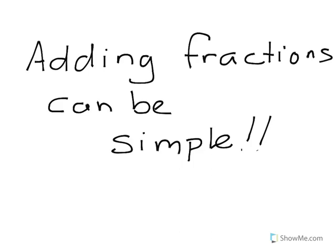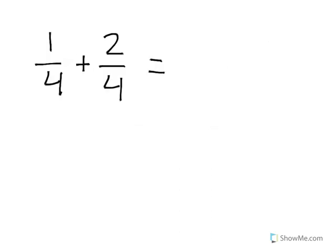Adding fractions is actually very simple. Let's look at a problem: one fourth plus two fourths. The first thing we need to check is whether our denominators are the same. For our purposes, if the denominator is the same, then we can add. If it's not, then we have a problem. In this case, one fourth plus two fourths — they both have the same denominator of four, so we are good to go.